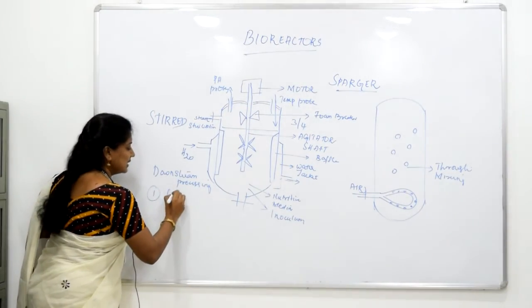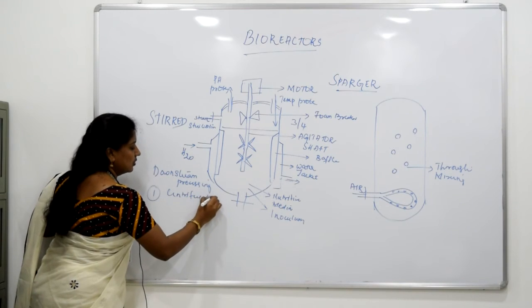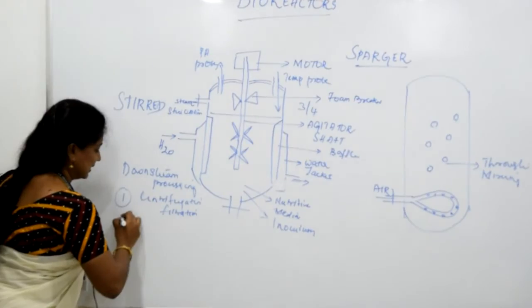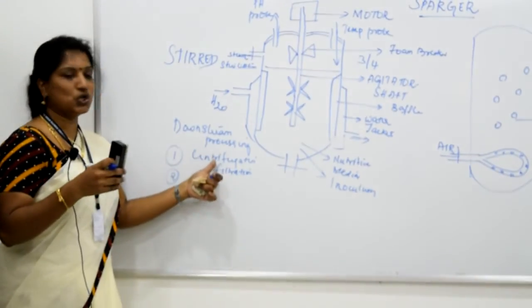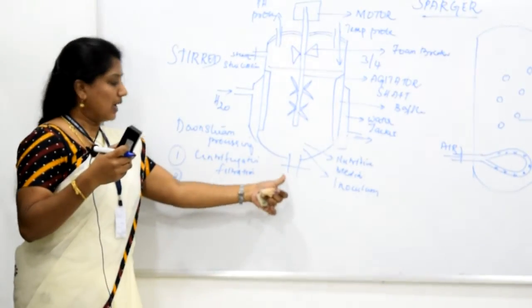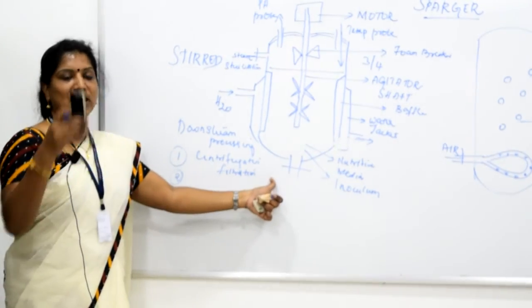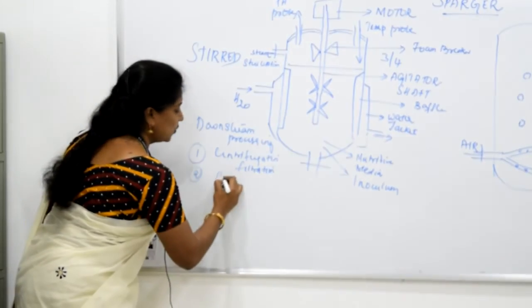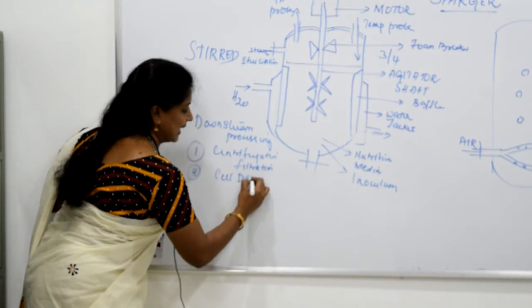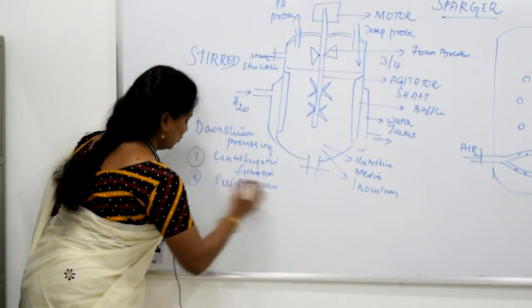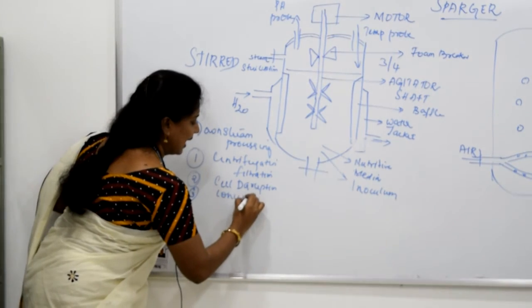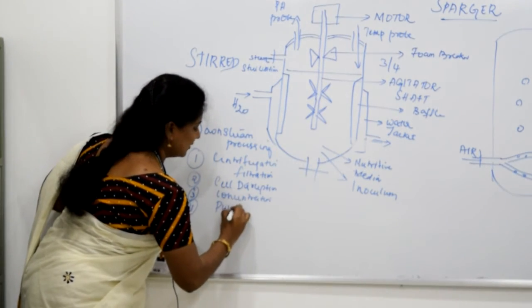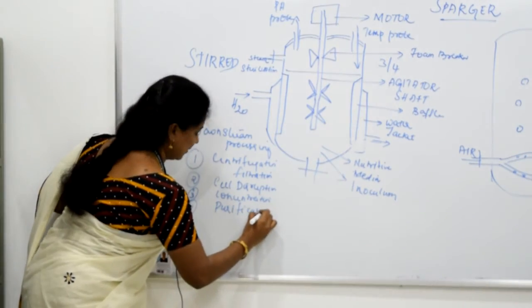In downstream processing we have five different steps in which we finally get out the product. First one is centrifugation, filtration or flotation. The second one is you either centrifuge or filter or float add floated particles to that, so you will be having some particles which are separated out. Then you go for cell disruption which is the second step. Then you go for concentration and you purify it and finally formulate the product.